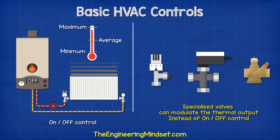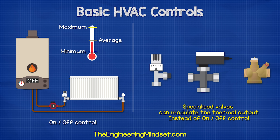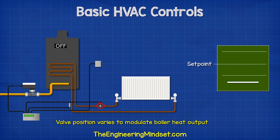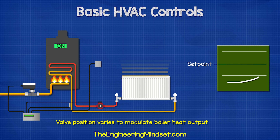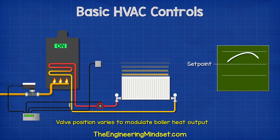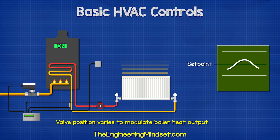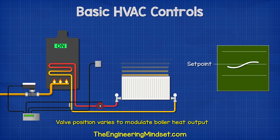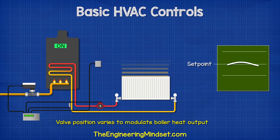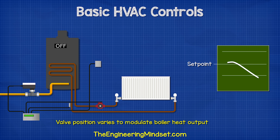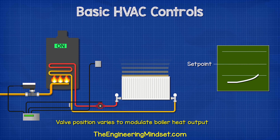On-off control makes it difficult to maintain a desired temperature. Instead, we can use special valves to modulate the thermal output, keeping the temperature within a certain deadband. In a simple heating system, when the gas boiler turns on, it will run at full power to heat the water, but then it reduces the gas supply by using a motorized valve. This reduces the heat output of the boiler instead of turning it off.